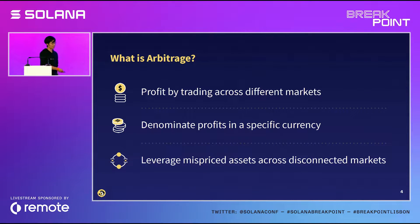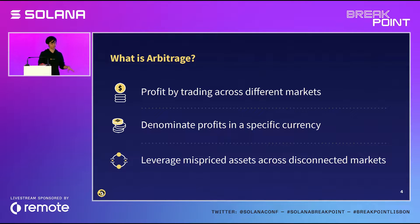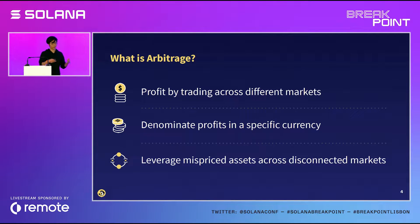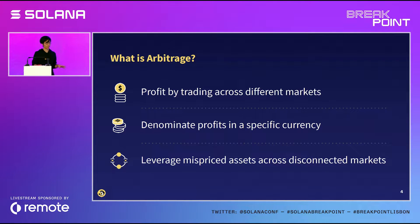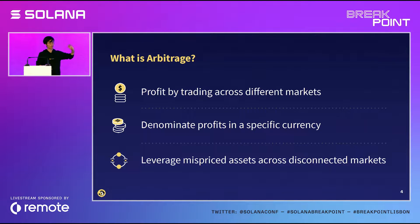So what is arbitrage? It's essentially just taking profit by finding dislocated markets and then taking profit in some specific currency — it could be Sol or USDC, whatever. You can do this between whatever two markets — it could be between a DEX and a CEX, or between two DEXs. Here I'm going to focus on something you can do primarily on Orca that I think is fairly interesting.